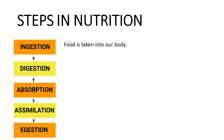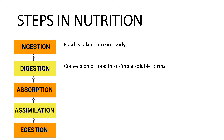The food which we intake is in complex form and it cannot be absorbed by the blood. So it has to be converted into simple form so that it is readily absorbed into the blood, and this process is called digestion. So digestion means conversion of food into simple soluble forms. After the food is converted into simple form, it gets absorbed by the blood and this process is called absorption. So absorption is transfer of soluble food into the blood.